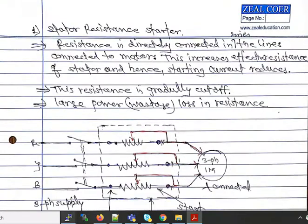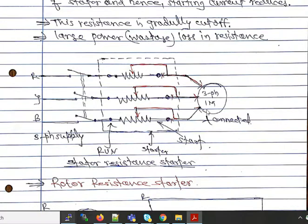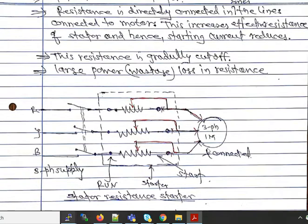In the stator resistance starter, resistances are directly connected in series with the supply lines to the motor. This increases the effective resistance of the stator and reduces the starting current. The resistance is gradually cut off as the motor accelerates. At the start position, the full resistance is in the circuit; at the run position, resistance is fully removed and full voltage is applied. However, this method is generally not preferred due to large power wastage in the resistances.